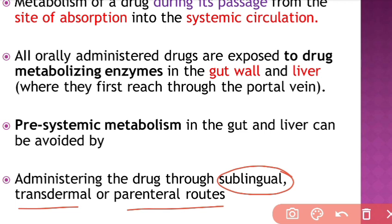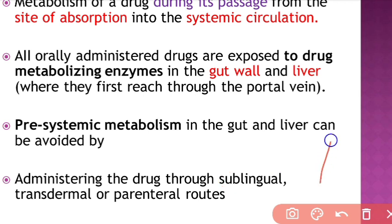For example, in the case of nitrates, first pass metabolism is avoided or bypassed, bioavailability increases, and you will get the desired effect in seconds. You can also use a transdermal patch or give the drug via parenteral routes to avoid first pass metabolism.